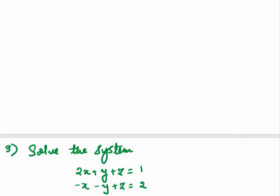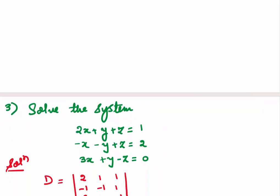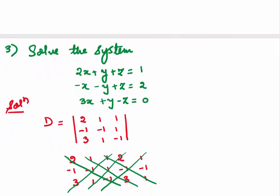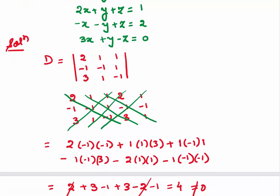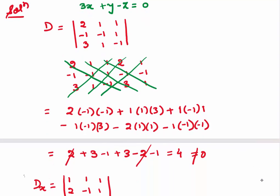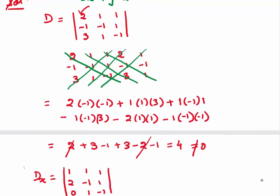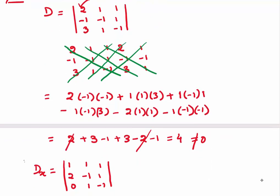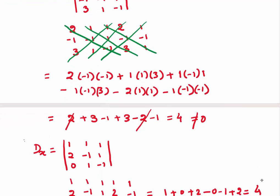Let's come to another example. We will first check whether our determinant is non-zero. Using Sarrus' method, the determinant value comes out to be 4, which is non-zero. Now let's find our determinants dx, dy, and dz. To find dx, I have replaced the first column — 2, minus 1, 3 — by the right-hand side 1, 2, 0. Using Sarrus' method, dx comes out to be 4.